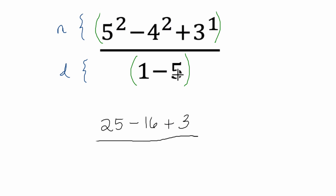In the denominator we have 1 minus 5. Well, I know 5 minus 1 is 4. And if we change the order from 5 minus 1 to 1 minus 5, we change the sign.